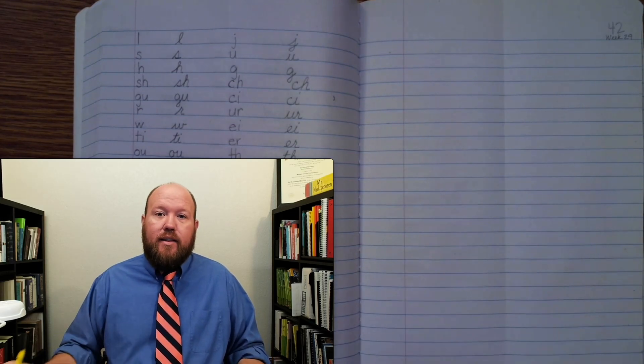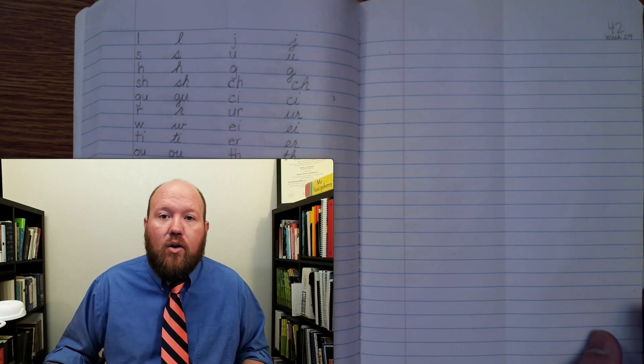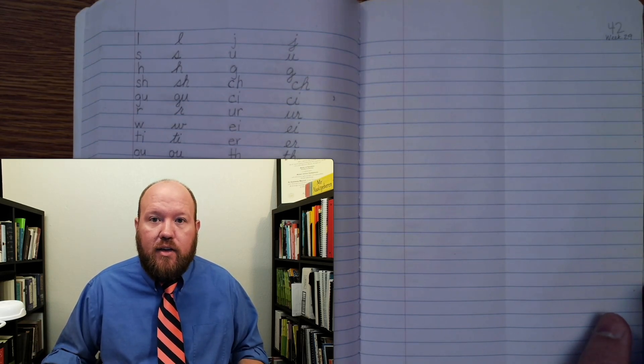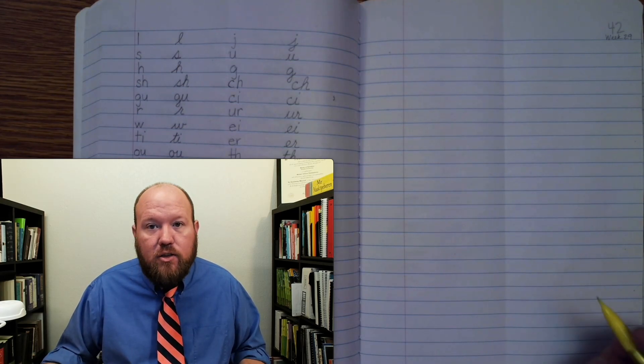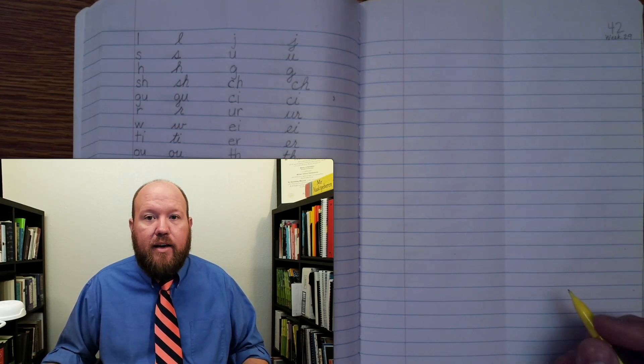If you get it wrong, that's okay. Then just put a line through it and put the correct one beside it so you know which ones you need to spend extra time studying. All right, I'll write it twice. First in manuscript for first and second, and then in cursive for third through fifth.